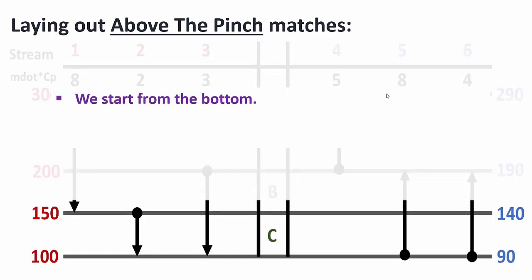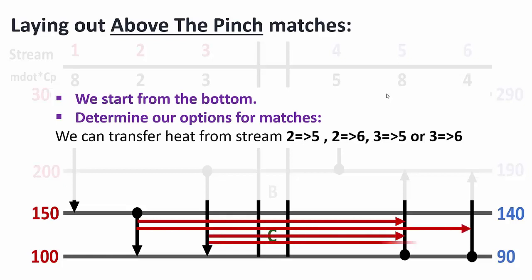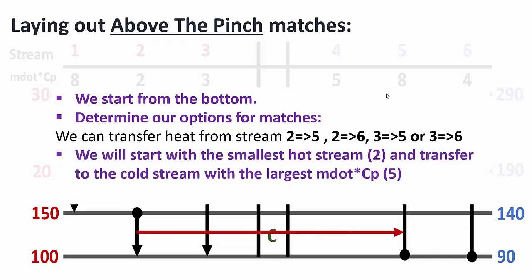We always start from the bottom when working on heat exchanger design above the pinch. We determine our options for matches first. Working horizontally, we can match streams 2 and 5, 2 and 6, 3 and 5, or 3 and 6. But we start with the smallest hot stream, which is stream 2 — it has the lowest Q — and we transfer this to the cold stream with the largest M_dot·Cp, which is stream 5. So our first match is between streams 2 and 5.